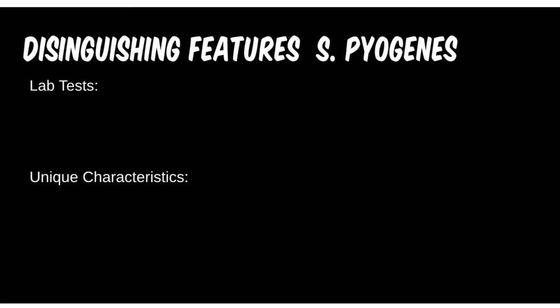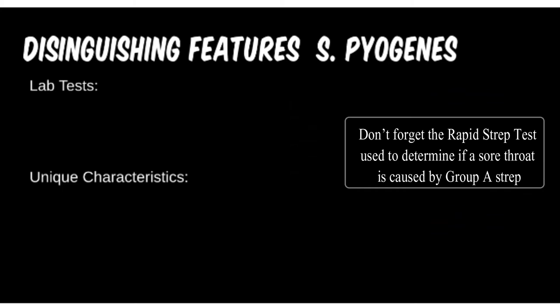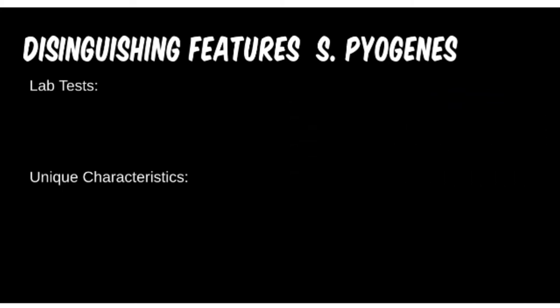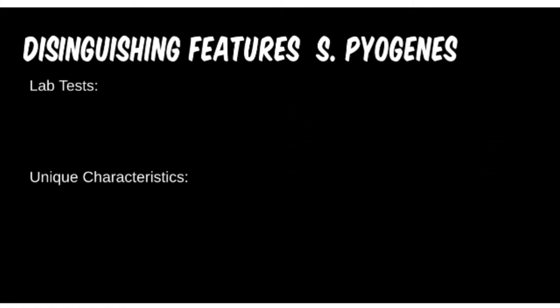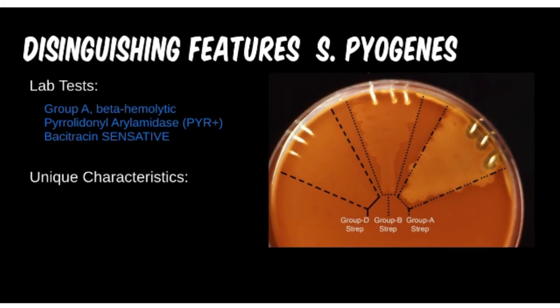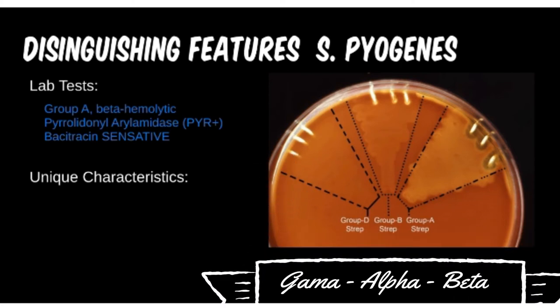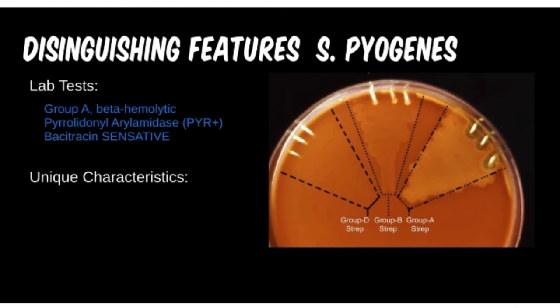Strep pyogenes is a Group A strep. It is also beta-hemolytic, or completely hemolytic, caused by the release of the streptolysin enzyme. If a patient comes in with vague sick symptoms and we see gram-positive cocci in chains, we need to figure out which antibiotics to treat with. We can run a culture and hemolytic reaction test, but that takes two to three days. Another enzyme we can check is the PYR enzyme, or pyrrolidonyl aminopeptidase. We use the PYR reagent, and if it changes color, then the enzyme is present, indicating Group A strep.